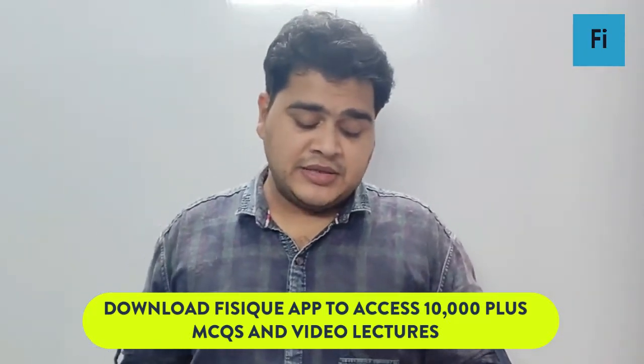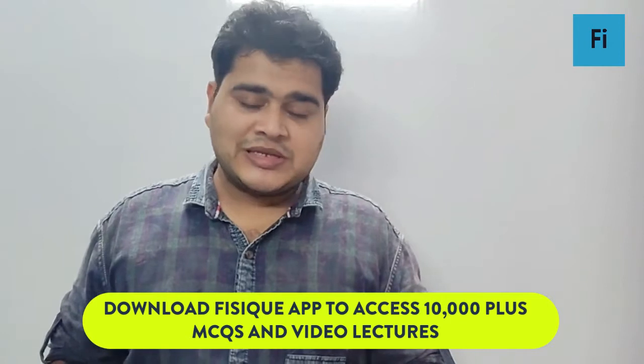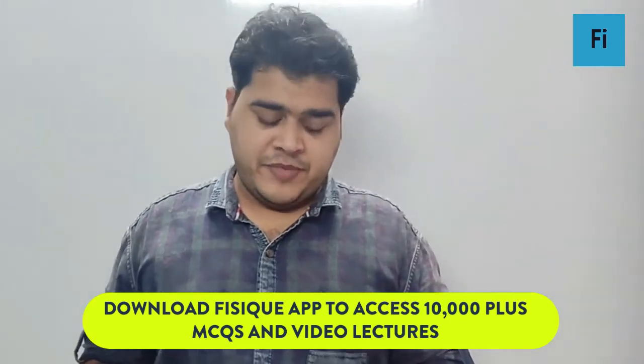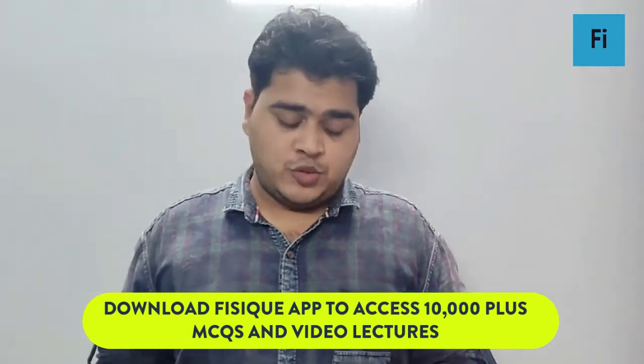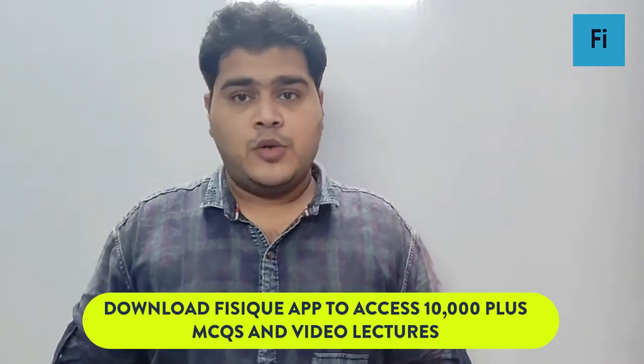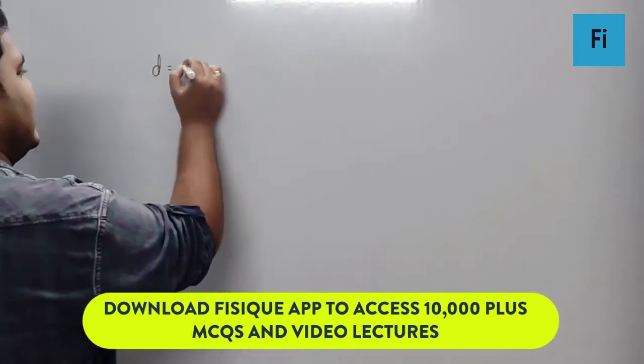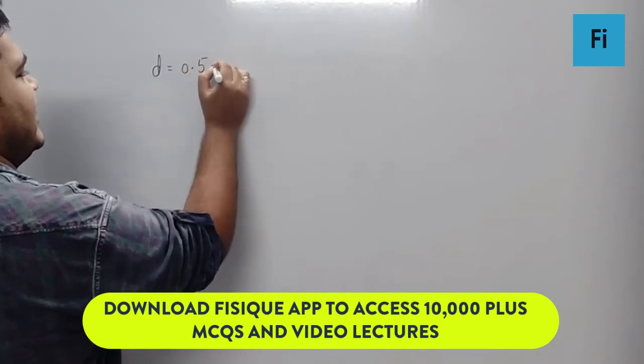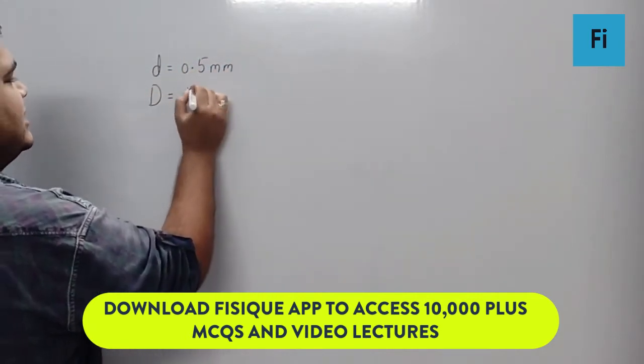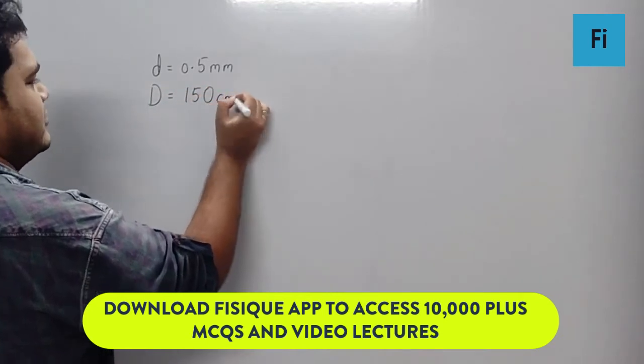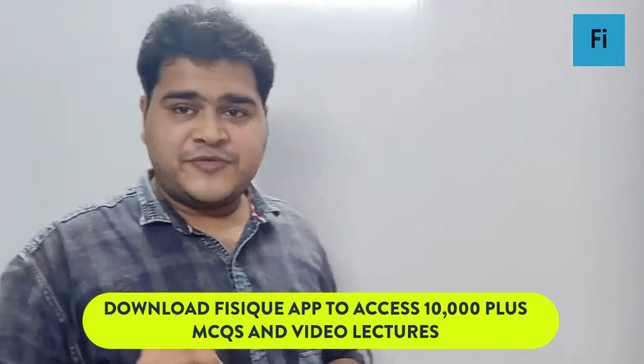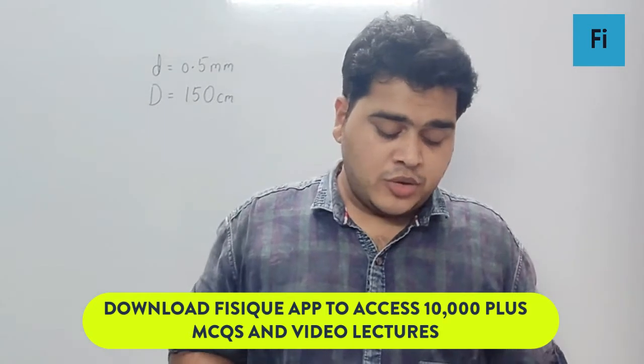As the question says, in the Young's double slit experiment, slits are separated by 0.5 mm and the screen is placed 150 cm away. Which means, the small d is given as 0.5 mm and the capital D is 150 cm. So that's the first part of the data.